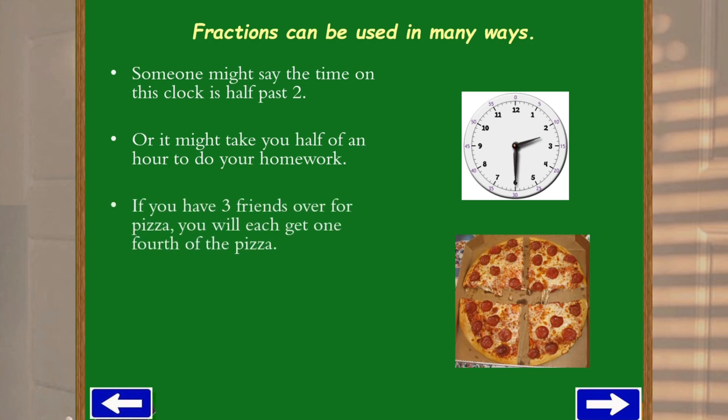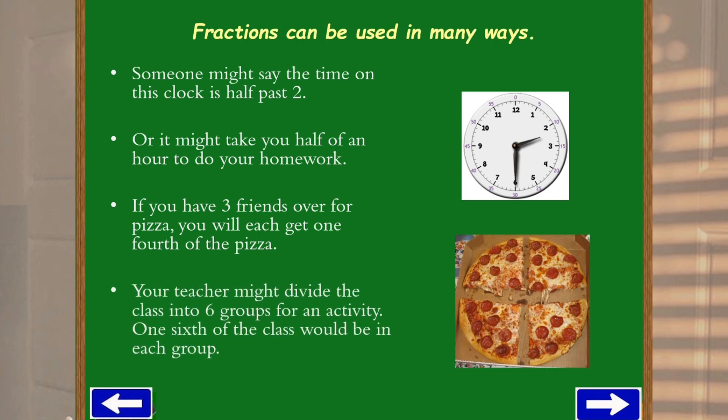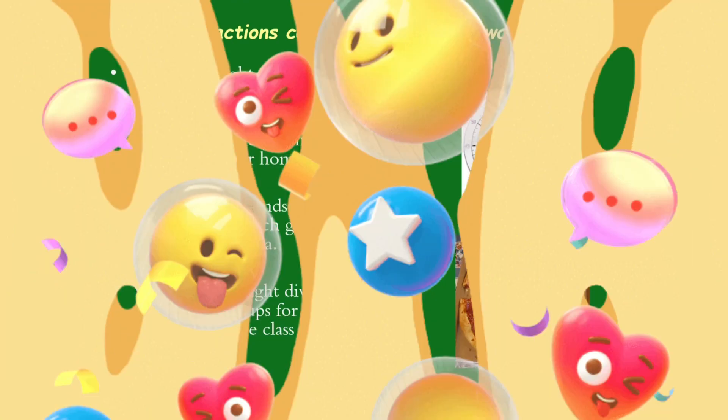If you have three friends over for a pizza, you will each get one fourth of the pizza. Your teacher might divide the class into six groups for an activity. One sixth of the class would be in each group. So these are some examples.